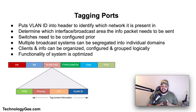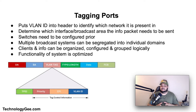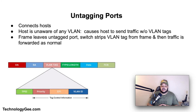VLAN tagging is performed by putting the VLAN ID into a header to identify which network it is present in. This helps in determining which interface or broadcast area the information packet needs to be sent in order to receive the right information. The switches need to be configured beforehand to work properly with the process of VLAN tagging. With this system, multiple broadcast domains can be segregated into individual domains, bridging traffic can be forwarded, and clients and information can be organized, configured, and grouped logically.